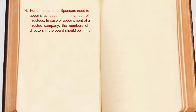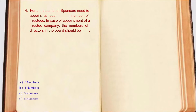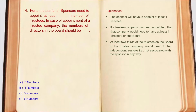Next question: For a mutual fund, sponsors need to appoint at least DASH number of trustees. In case of appointment of a trustee company, the number of directors on the board should be DASH. Sponsors must appoint at least 4 trustees. If a trustee company is appointed, the board of that company should have at least 4 directors. At least two-thirds of the trustees should be independent. So the correct answer is Option B: Four.